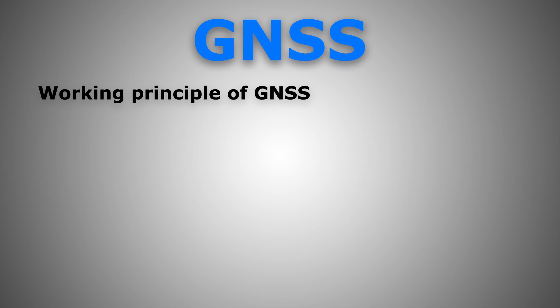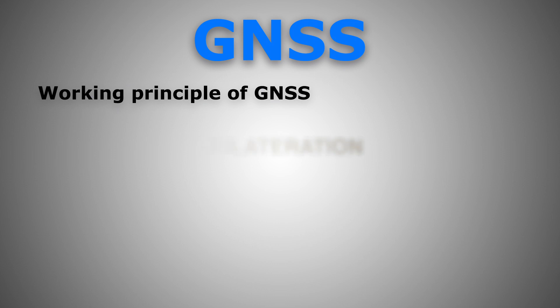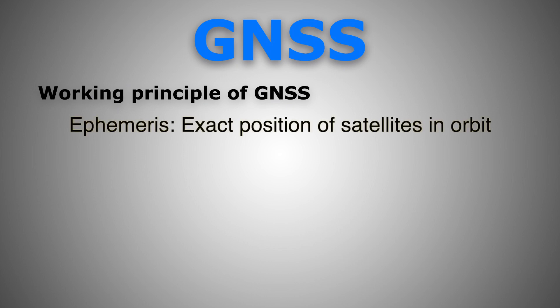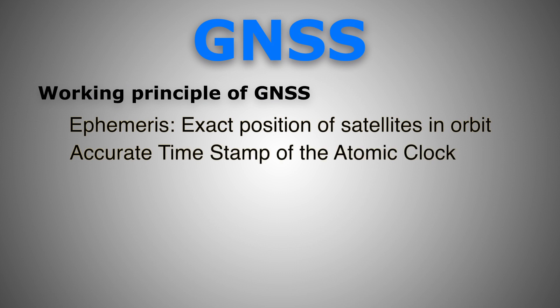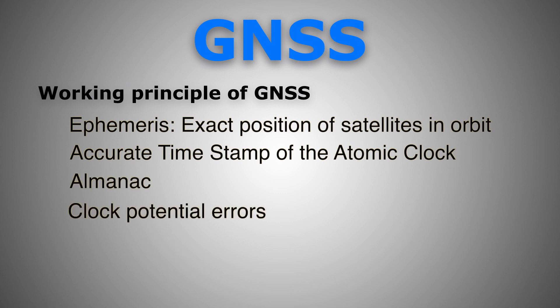Now the principle of operations: all GNSS work on the principle of trilateration. The SV or satellite transmits two signals — L1 and L2 — on different frequencies, because of the ionospheric layer (more on that later). These signals are received by the receiver. Embedded in these signals is a NAV message containing data such as the ephemeris (the satellite's exact position in orbit), the accurate timestamp from the onboard atomic clock, almanac, clock potential errors, and information about the ionosphere layer.